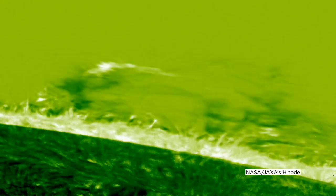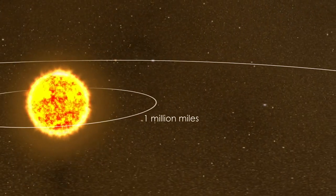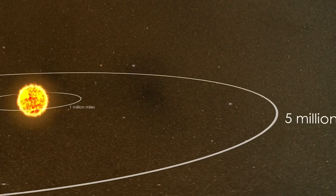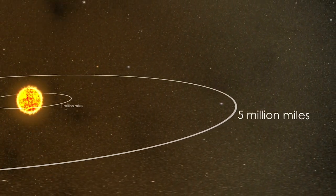The model also shows this whiplash process creating strong magnetic waves, which scientists think could participate in heating the sun's atmosphere and propelling the constant outflow of solar material called solar wind.